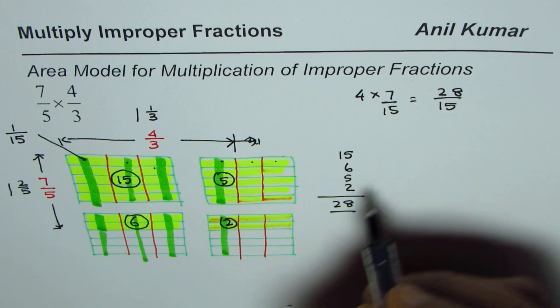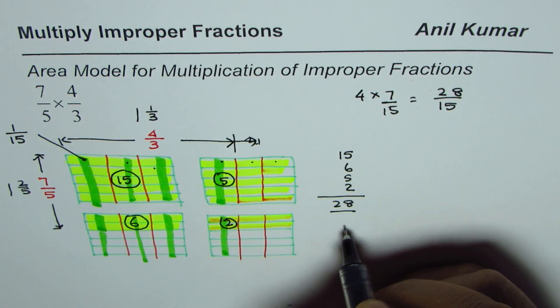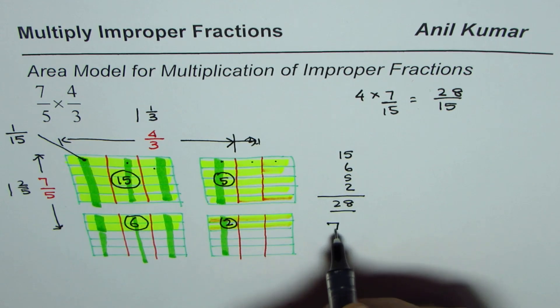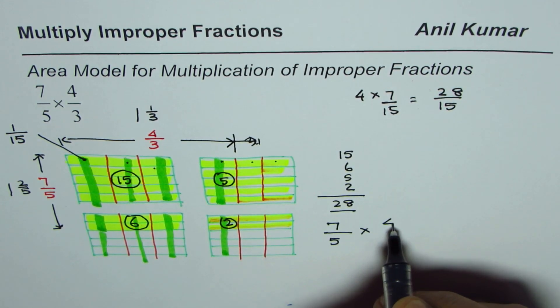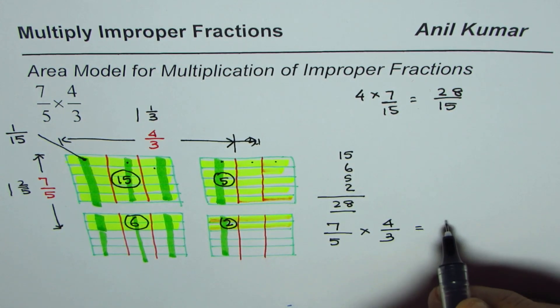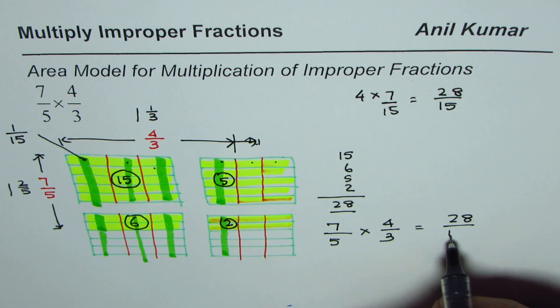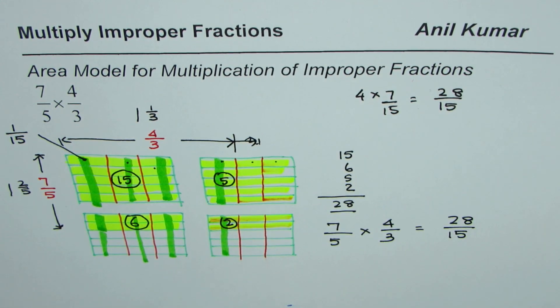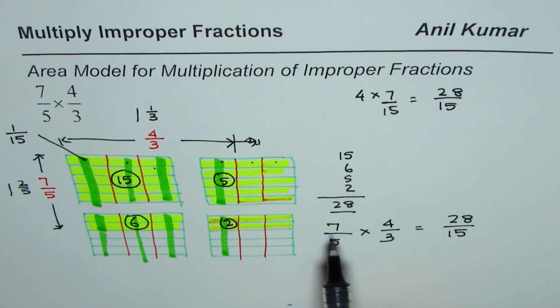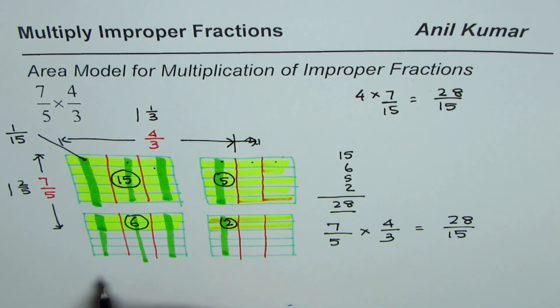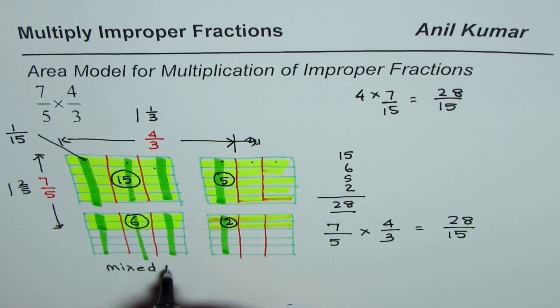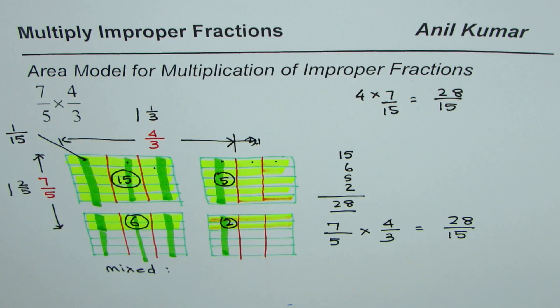15 and 6 gives 21. 21 plus 5 is 26. Plus 2 is indeed 28. So we again get total parts shaded is 28 out of 15. Go back to the original. So we get the same answer, 28 out of 15. So in short, we can write 7 out of 5 times 4 over 3 is indeed equals to 28 over 15. So that is how it is. You know, when you multiply improper fractions, the idea is to multiply the numerators. 7 times 4 is 28 and the denominators 5 times 3 is 15.